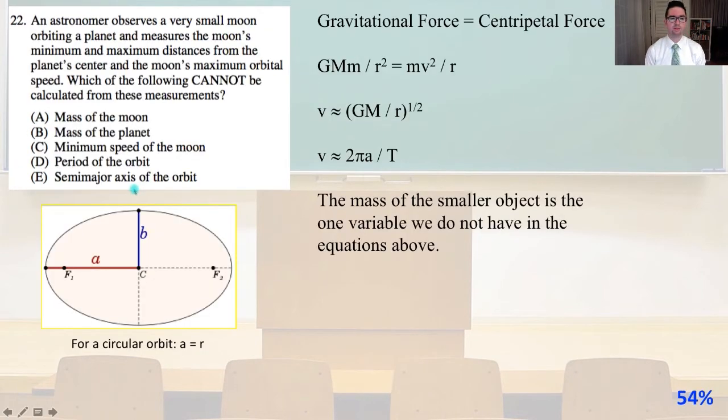Number 22. An astronomer observes a very small moon orbiting a planet and measures the moon's minimum and maximum distances from the planet's center and the moon's maximum orbital speed. Which of the following cannot be calculated from these measurements? The gravitational force is going to equal the centripetal force, where GMm over r squared equals mv squared over r.